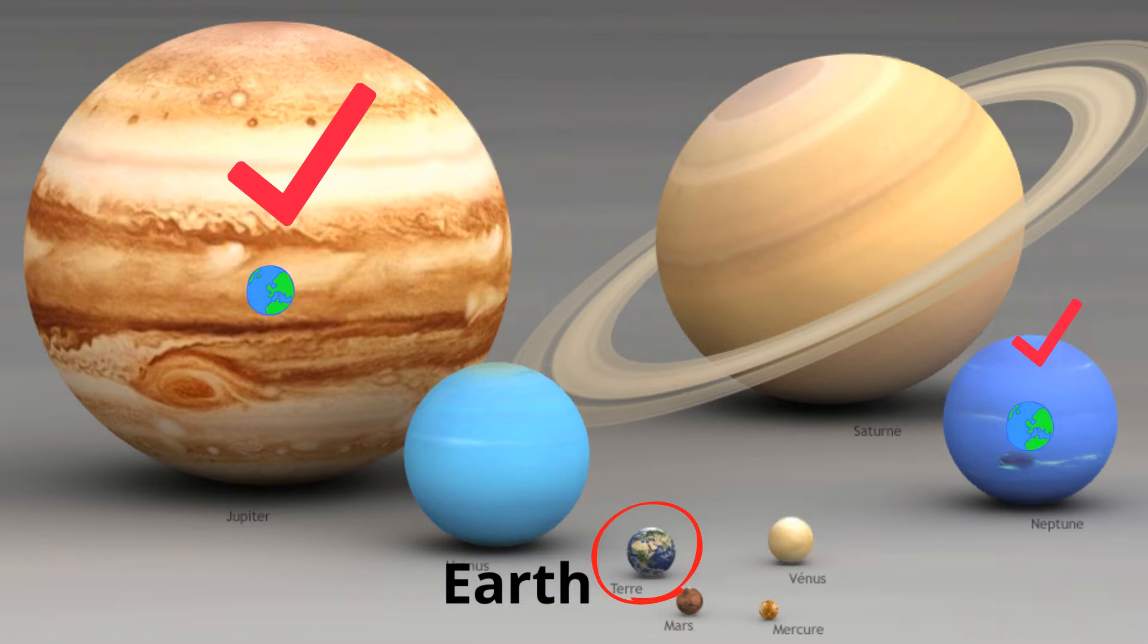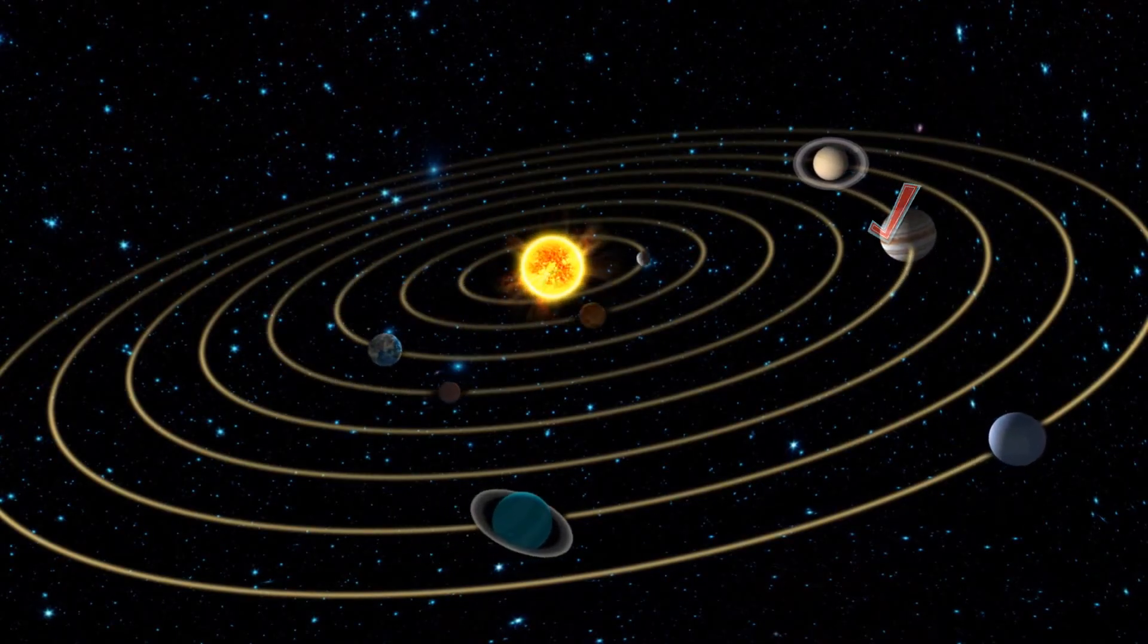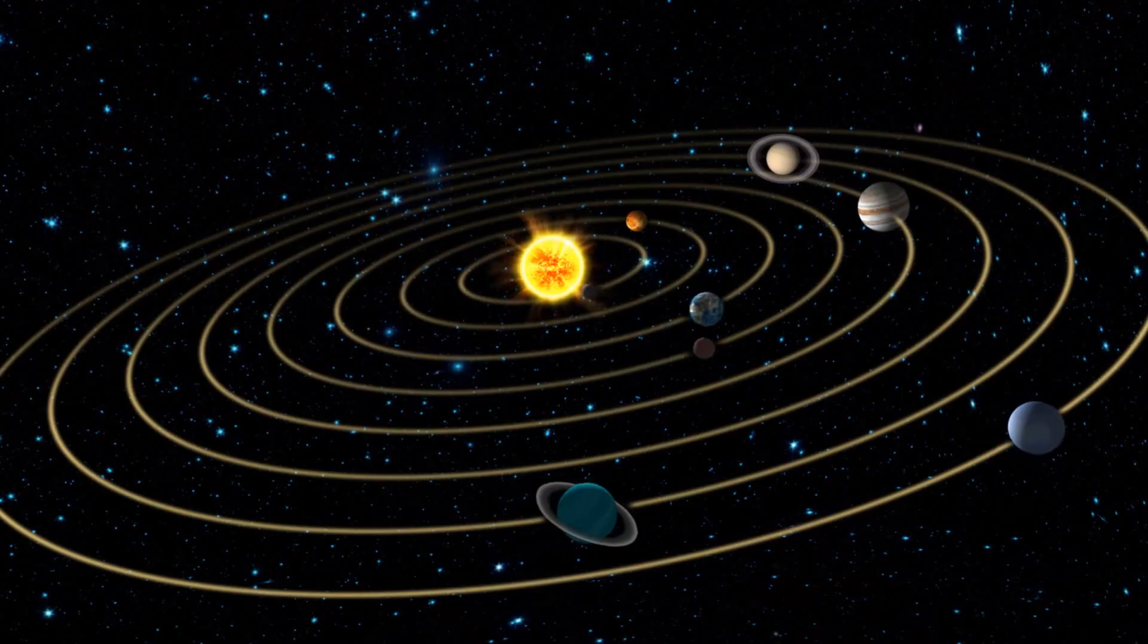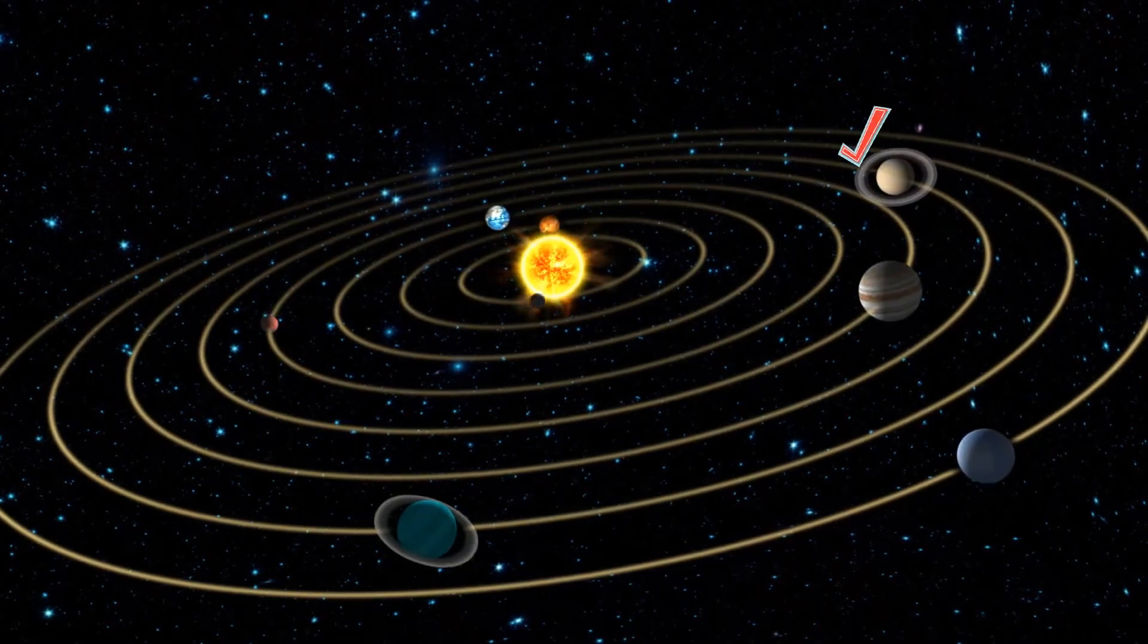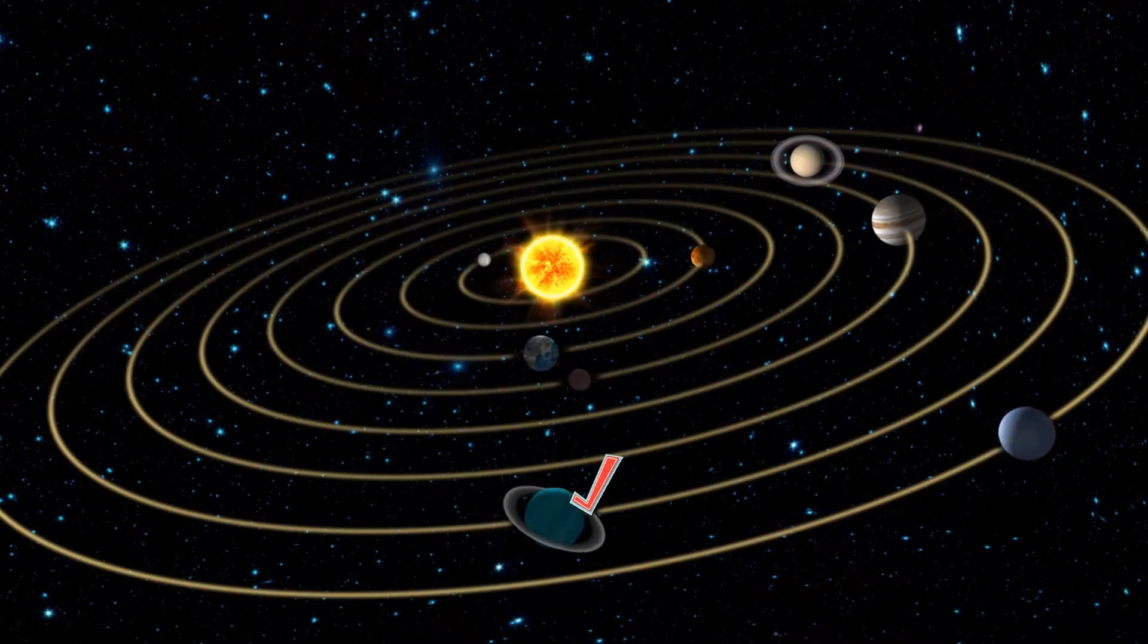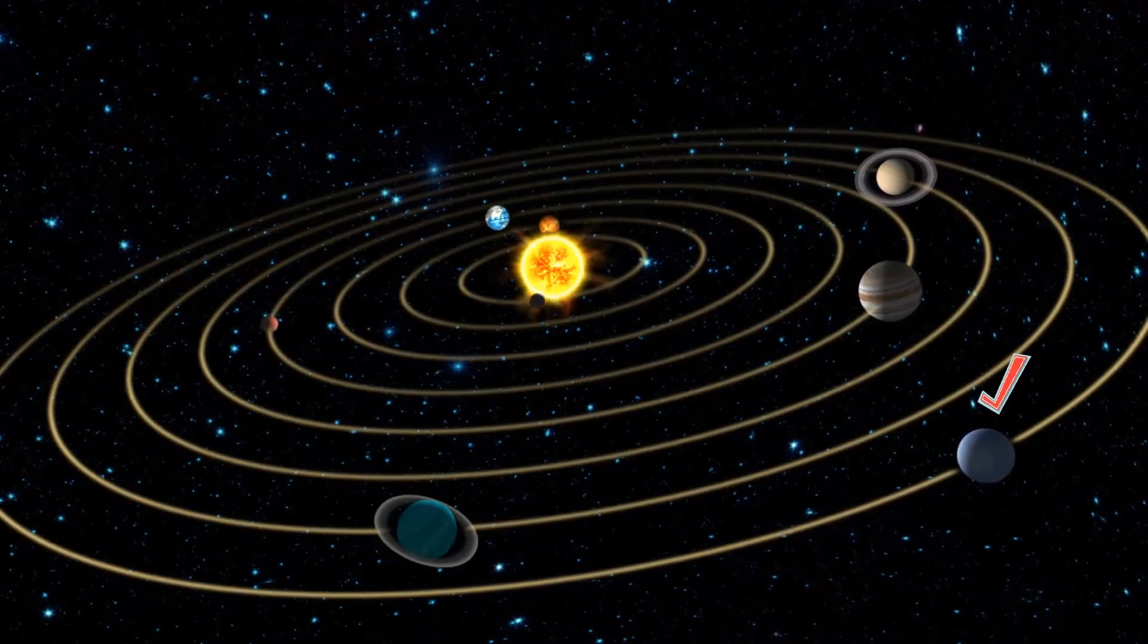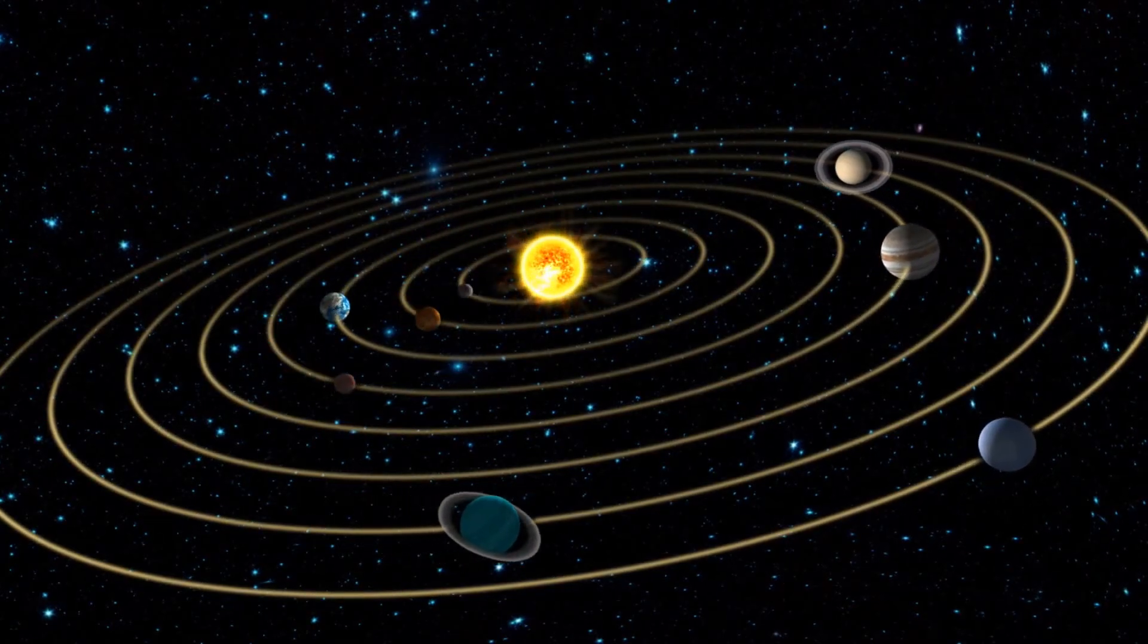The gas giants also take a long time to revolve around the sun. It takes Jupiter 4,331 days to revolve once around the sun, Saturn 10,747 days, Uranus 30,589 days, and Neptune a staggering 59,800 days.